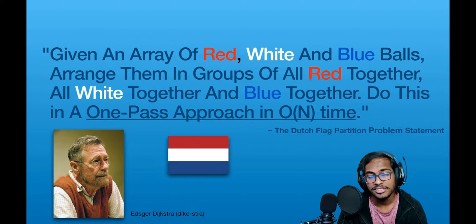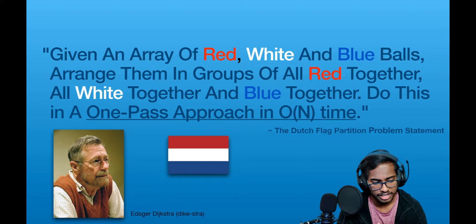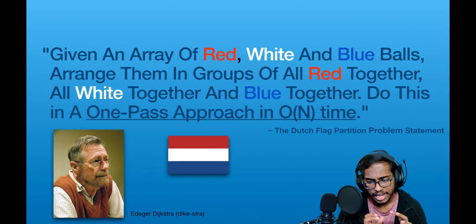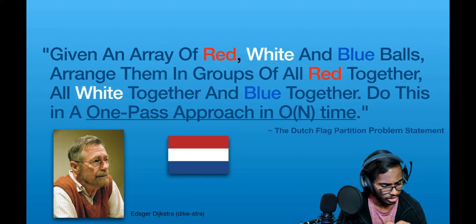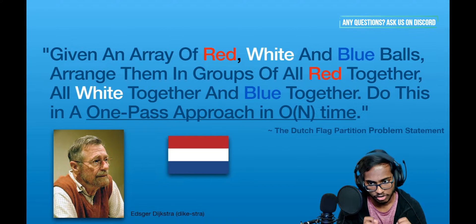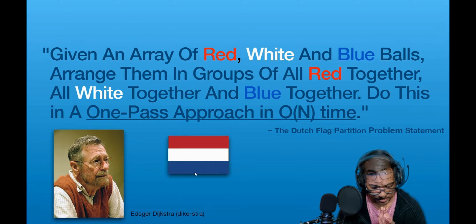The flag of the Netherlands consists of three colors: red, white, and blue. Given balls of these three colors arranged randomly in a line, the task is to arrange them such that balls of the same color appear together, and their collective color groups are in the correct order — the reds, followed by the whites, and finally the blues.